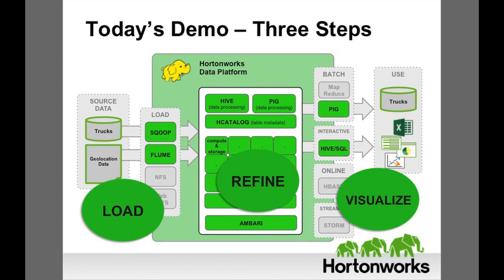We have placed sensors on our 100 long-haul trucks. The sensors communicate the position and speed of each vehicle. They also sense unsafe events, such as speeding or swerving. We will load, refine, and visualize this geolocation data.